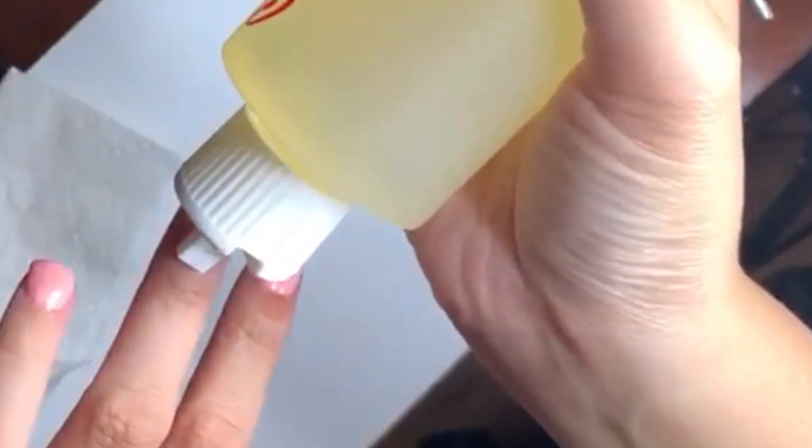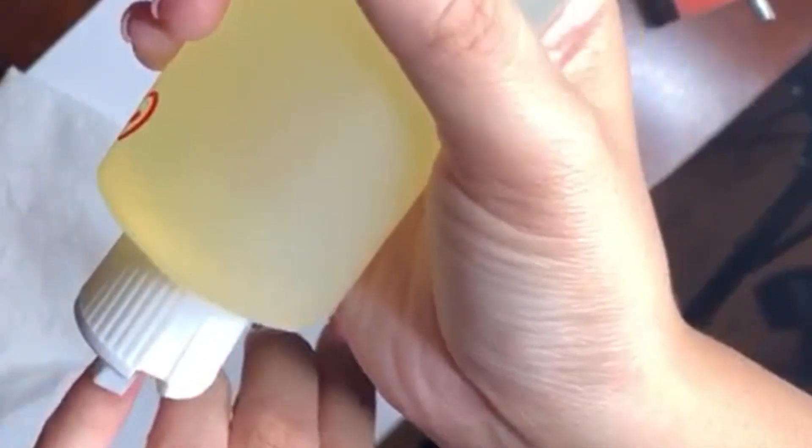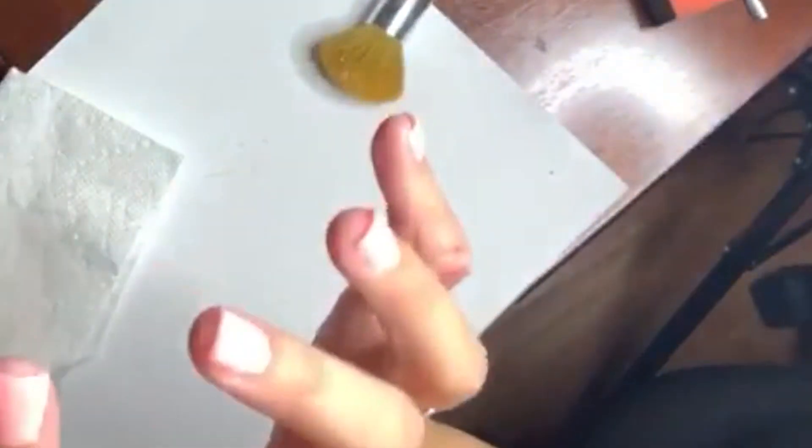After waiting about two minutes for my finishing gel to dry, I will just apply some cuticle oil and massage it into my cuticles. And that's how you do your own dip nails.